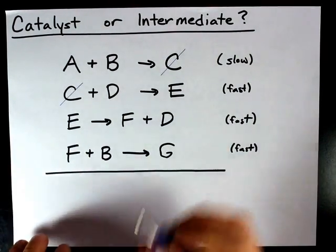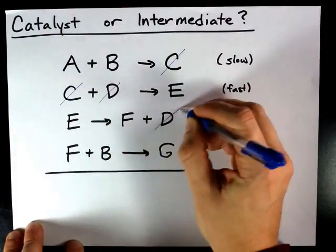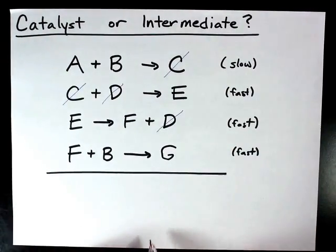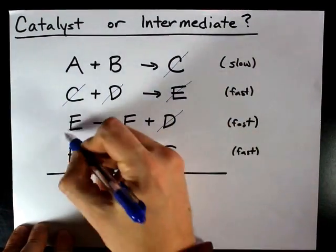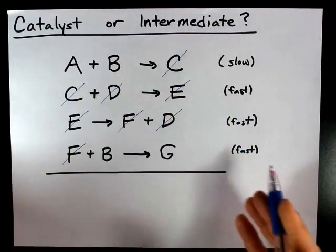You might also notice that D is on the left and the right. So D cancels out of the overall reaction. E is on the right and left, they cancel. F is on the right and left, they cancel.